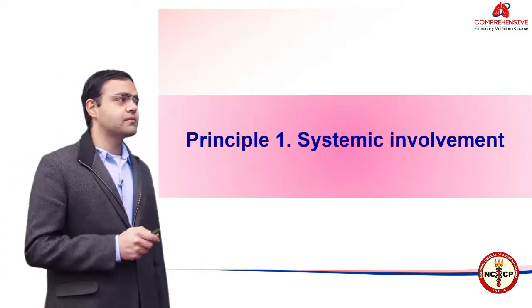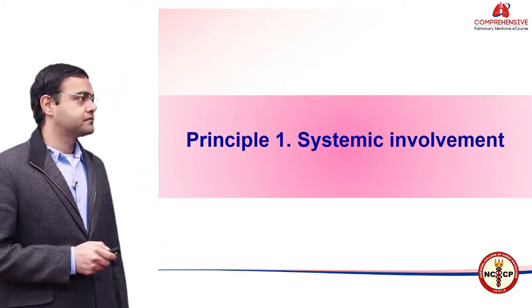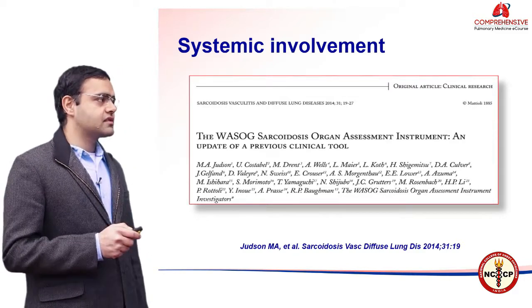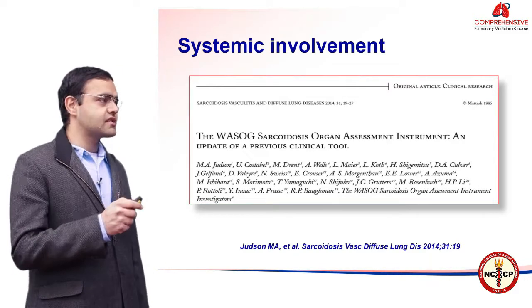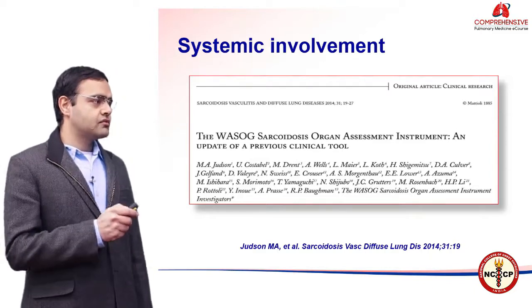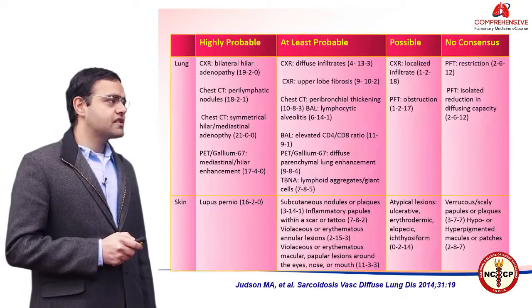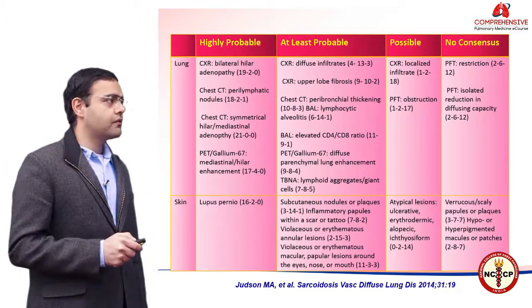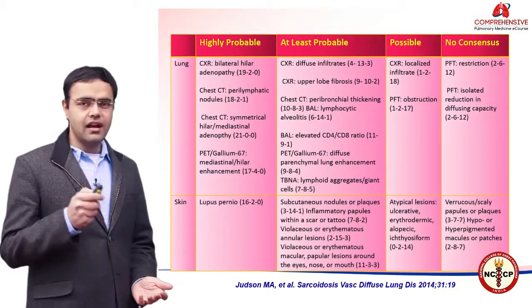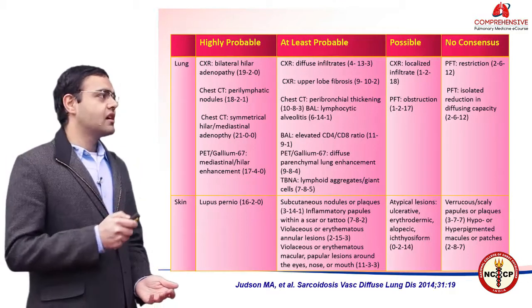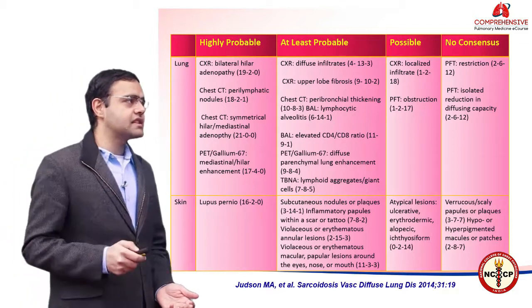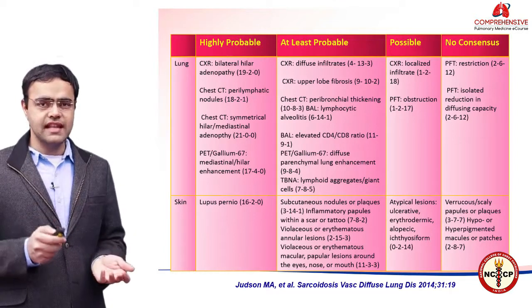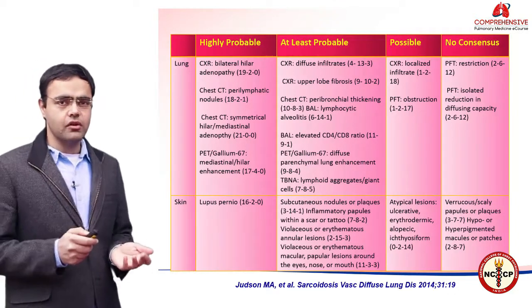The first principle is demonstration of systemic involvement. This is the World Association of Sarcoidosis and Other Granulomatous Disorders (WASOG) sarcoidosis organ assessment instrument, published in 2014. This instrument defines, for different organs and organ systems, what kind of involvement suggests highly probable disease, at least probable disease, possible disease, and features for which there is no consensus whether it will be definitely sarcoidosis or not.